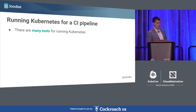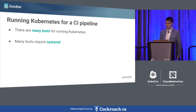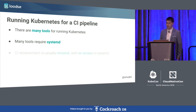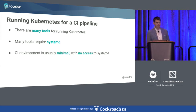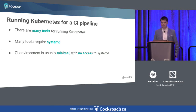There are many solutions for running Kubernetes, such as Minikube, KubeADM, and DnD, but many of these solutions require systemd to start and manage all services needed for a cluster. The problem is that CI environments are usually minimal or run older operating system versions, such as Ubuntu 40.04, with no access to systemd, making it difficult to use such solutions.